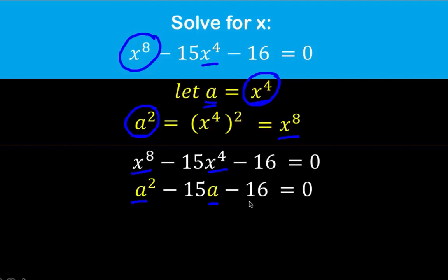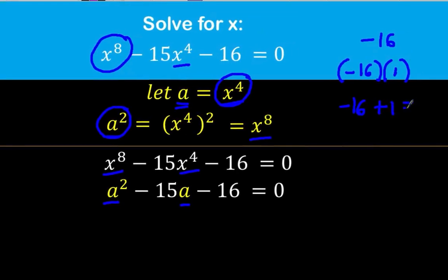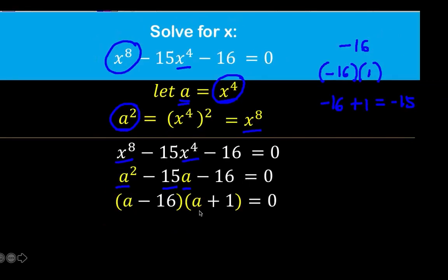Notice that a squared minus 15a minus 16 is a factorable trinomial. So how do we factor this out? We take this negative 16, and we look for factors of negative 16 such that when we add, the result is negative 15. And those two factors are negative 16 times positive 1, because negative 16 times 1 is negative 16, but when you add negative 16 plus positive 1, the result is negative 15, which is the coefficient of our middle term.